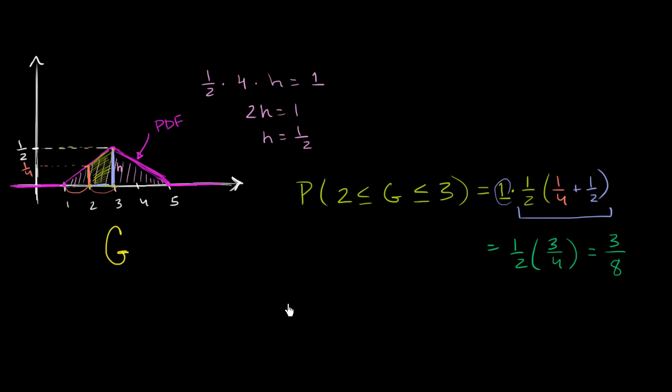Now let me ask you another question. And this is related to what we saw in the last video, but just a little bit of practice. What is the probability that g is going to be equal to exactly 3?